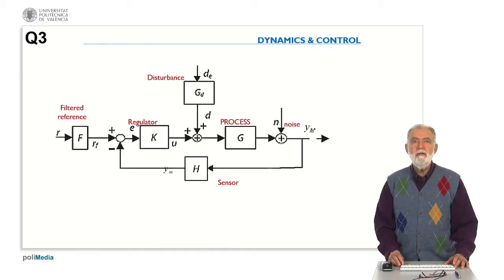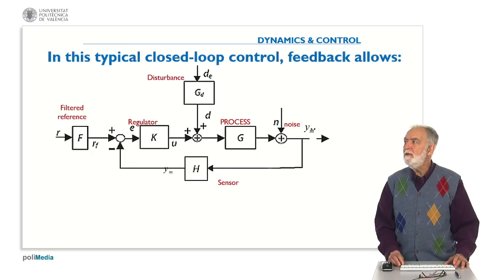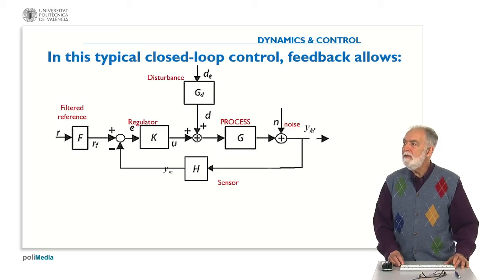So in this question, let's consider this typical closed loop control where there is a process, disturbance, reference, sensor, regulator, and the measurement output is YM.